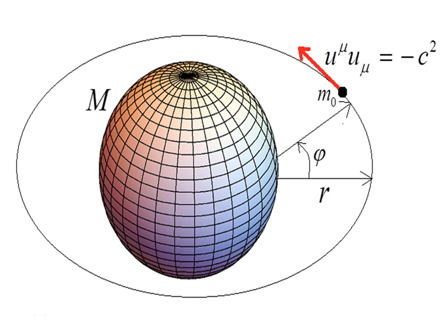Here's our mass and the 4-velocity u-mu. The square of the magnitude of the 4-velocity for a particle with mass following a geodesic is always equal to minus c squared. Here's the source of our Schwarzschild spacetime geometry, and we have a smaller mass in circular orbits. We're interested in the circular orbits around this Schwarzschild mass — that's what we're going to investigate in this video.